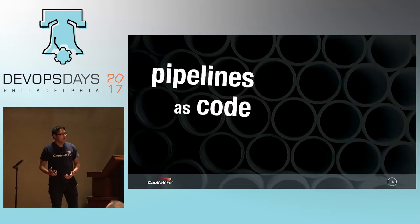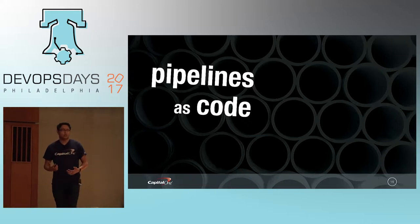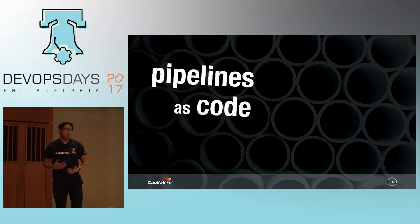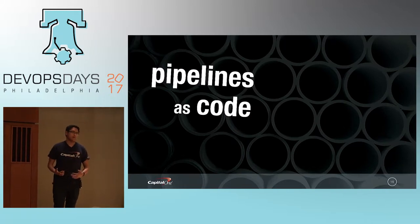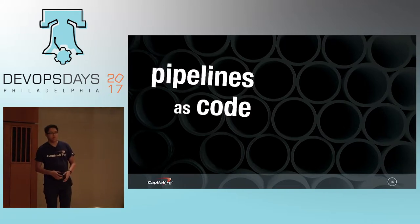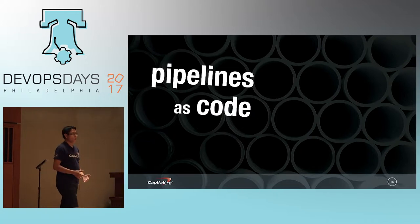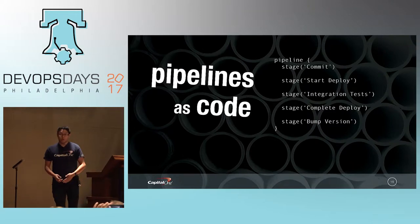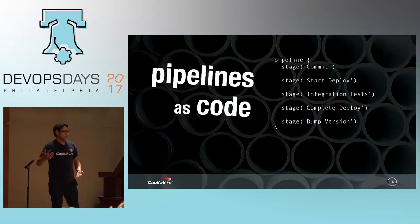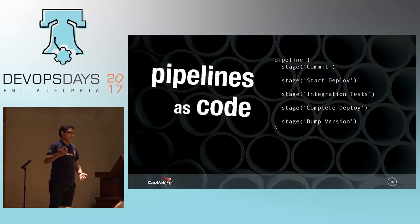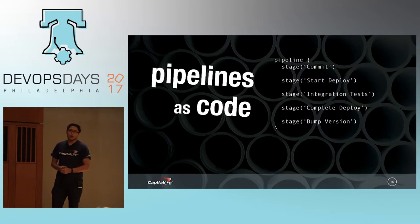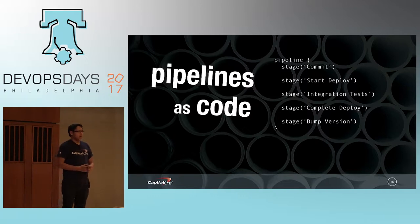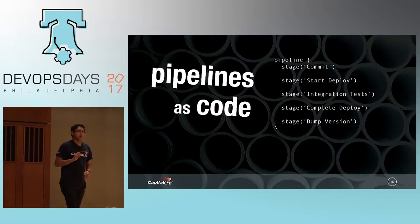Our pipelines are codified as well. Historically, we used the Jenkins Job DSL plugin, which uses Groovy scripts to provision all the jobs for your pipeline. Right now we're moving to Jenkins 2.0 declarative pipelines using Jenkinsfiles. The Roswell tool handles a lot of the individual steps that go into each of these stages.